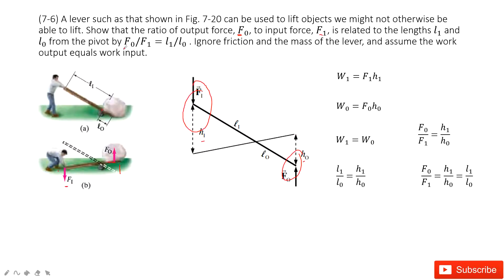How can we do that? First, we look at the work done by F1. The work done by F1 is F1 times the distance it moved, h1, and then cosine theta. Theta is zero because it moves down, so cosine zero is one, so W1 is F1 h1.